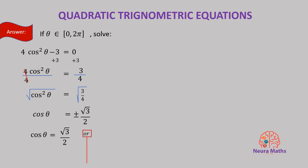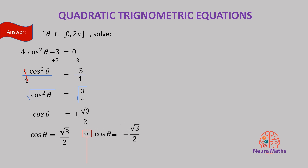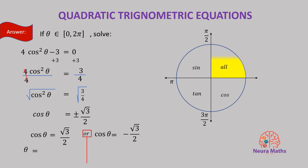Remember, to solve a trig equation we need to find the measure of angle theta within one full period. Let's ask ourselves: what angles have a cosine of positive root 3 over 2? The angles whose cosine is positive root 3 over 2 exist in quadrant 1 and quadrant 4. So the angles are 30 degrees and negative 30 degrees, which is 330 degrees.